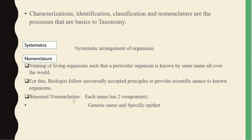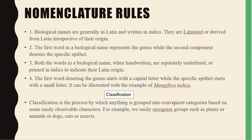For naming, we follow binomial nomenclature, which has two components: the generic name and the specific epithet. The nomenclature rules state that biological names are generally in Latin and written in italics. They are Latinized or derived from Latin irrespective of their origin. The first word in a biological name represents the genus, while the second component denotes the specific epithet.